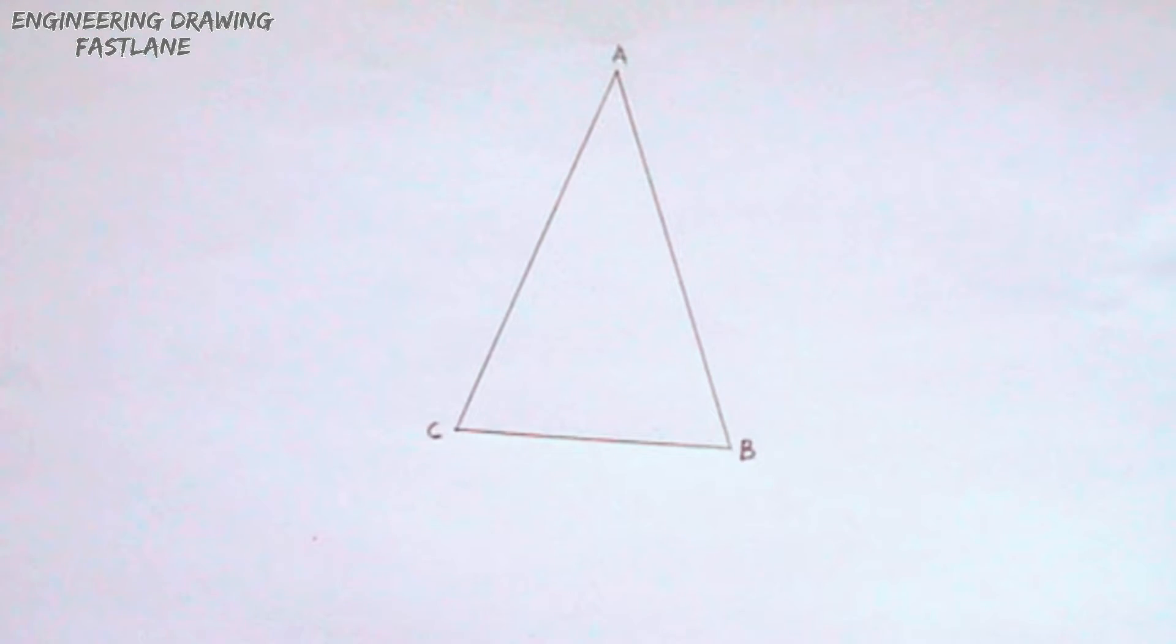The next step to take is to bisect any two sides of the triangle. For this video I'm bisecting line BC and line AC.